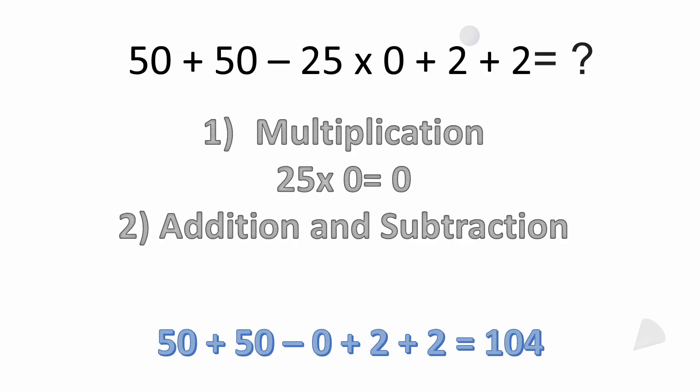So let's start out with this using order of operations. You've got the problem 50 plus 50 minus 25 times 0 plus 2 plus 2. Looking at the convention, we don't have any parentheses, we don't have any exponents, we don't have any division. We do have multiplication.